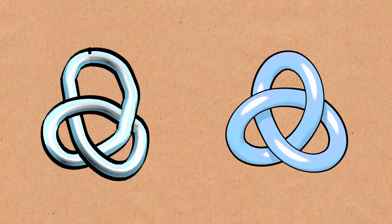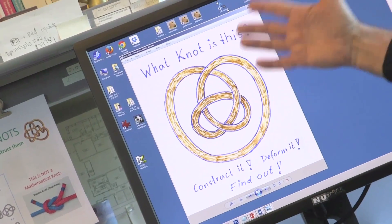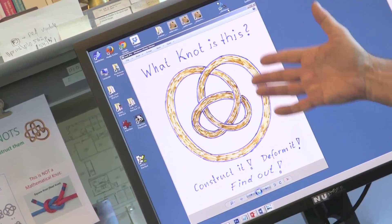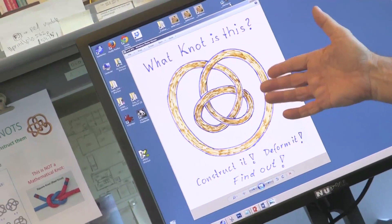So here you see an example where you have something that looks slightly more complicated. It's relatively easy to unravel this and figure out, okay this is just a trefoil knot. Well things can get worse.